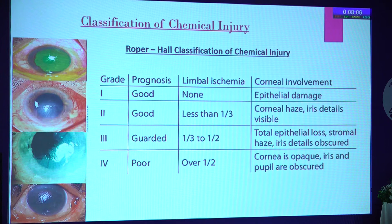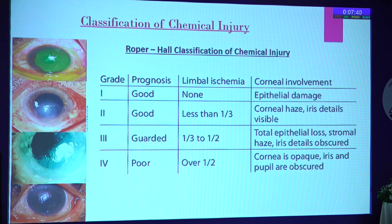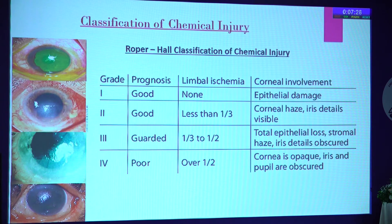There are multiple systems of classifying chemical injuries. The classification system is based on how much tissue damage there is over the ocular surface — if we know the amount of damage, we will be more prepared to discuss prognosis or what steps to take in the future. The first important classification was by Roper Hall, which considered limbal ischemia and corneal involvement. In any chemical injury classification, limbal ischemia has the highest importance. They divided chemical injury into Grade 1 to Grade 4, with Grade 4 having a poor prognosis where more than half of the limbal ischemia is present.